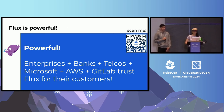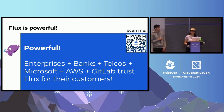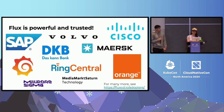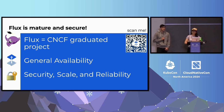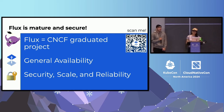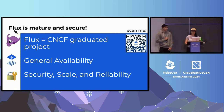Flux is incredibly powerful. We've been doing this for several years now, which is why you can see that enterprises, banks, telcos, Microsoft, Amazon, GitLab, and many, many companies not only use Flux, but they trust Flux to provide GitOps to their end users. These are just some of the logos, representing so many different types of verticals and industries that need and use Flux regularly. It is so mature and secure — it has been a graduated project in the CNCF for several years now, it is general availability, and security, scale, and reliability are core to its design.